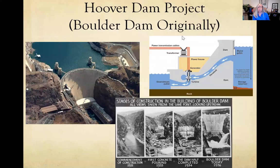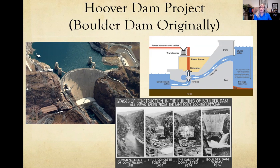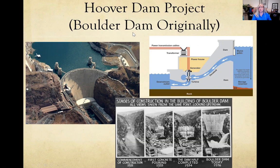Another attempt was a public works project — the Hoover Dam, constructed near Las Vegas. It put a lot of people to work, provided power, and resolved several regional issues at once. This would be similar to the work projects Franklin Roosevelt would later put together in the New Deal. However, this was only in one small area — it wasn't widespread enough to attract workers from across the country — so it had limited success.